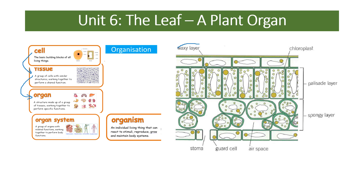The top layer of the leaf is the waxy cuticle — a waterproof layer to stop water being lost through evaporation. Below that is the upper epidermis, then the palisade layer — palisade mesophyll cells adapted to carry out photosynthesis. Below that is the spongy layer, which may contain xylem and phloem, and is full of air spaces so gases can diffuse in and out of the cells. Plants take in carbon dioxide for photosynthesis and release oxygen which diffuses out into the atmosphere.